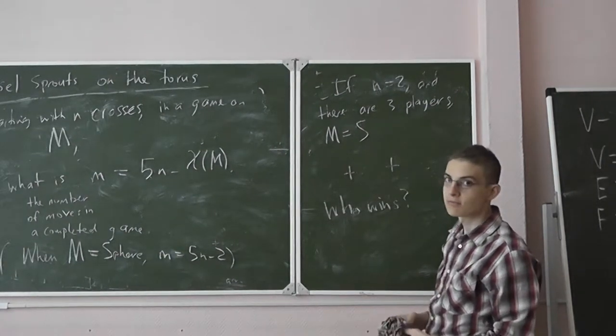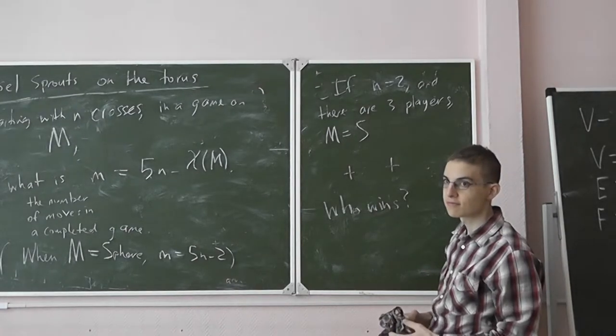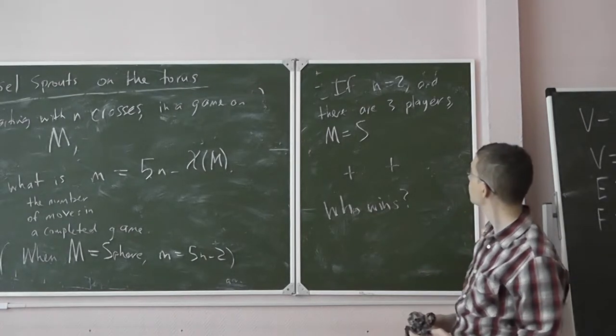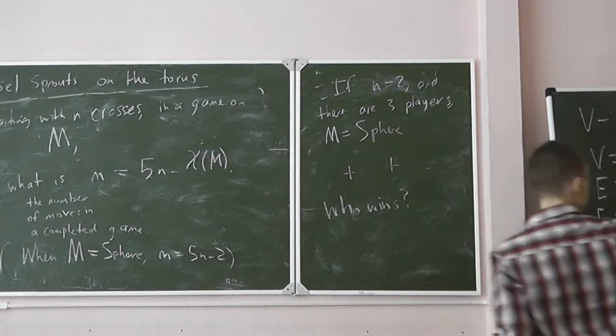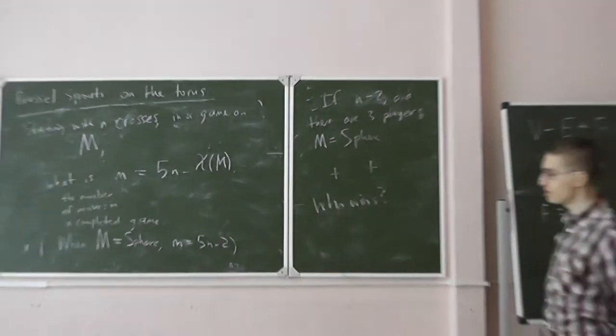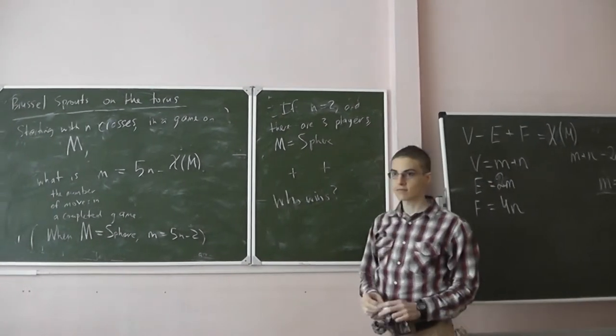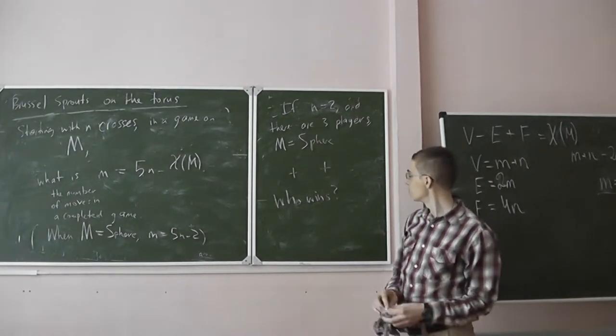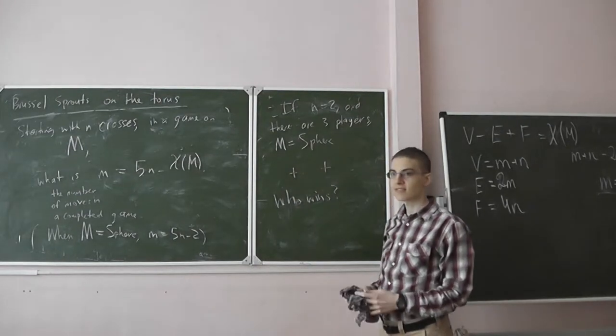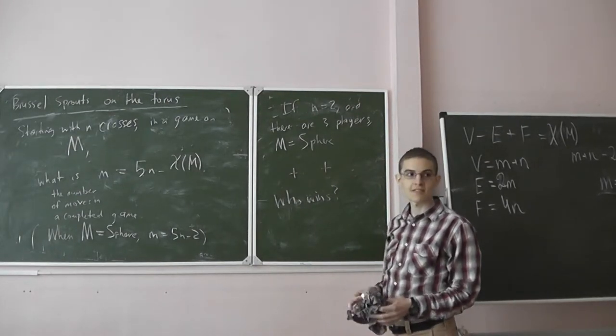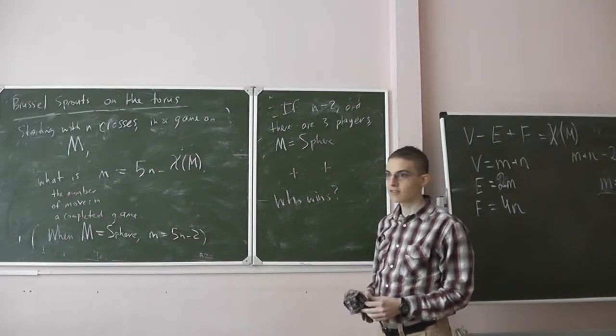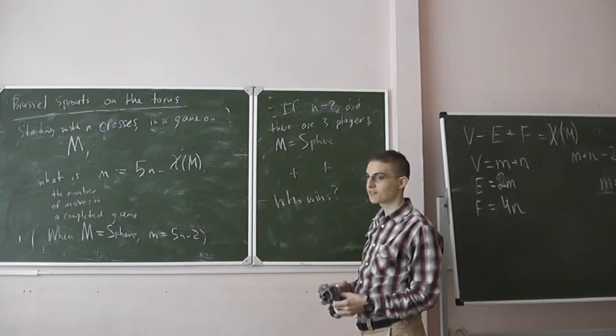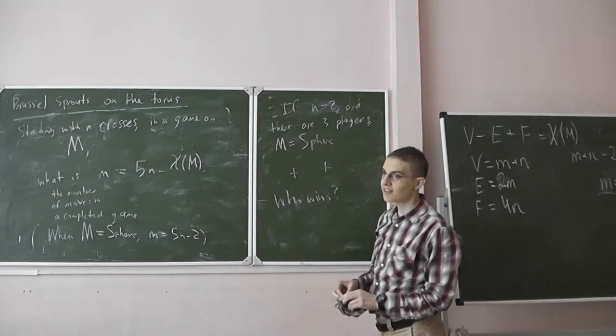Tell me, how many moves are there? M is equal to—for a sphere—M is equal to 8. And 8 divided by 3, the remainder is 2. So the second player wins. Okay, so let me generalize that.